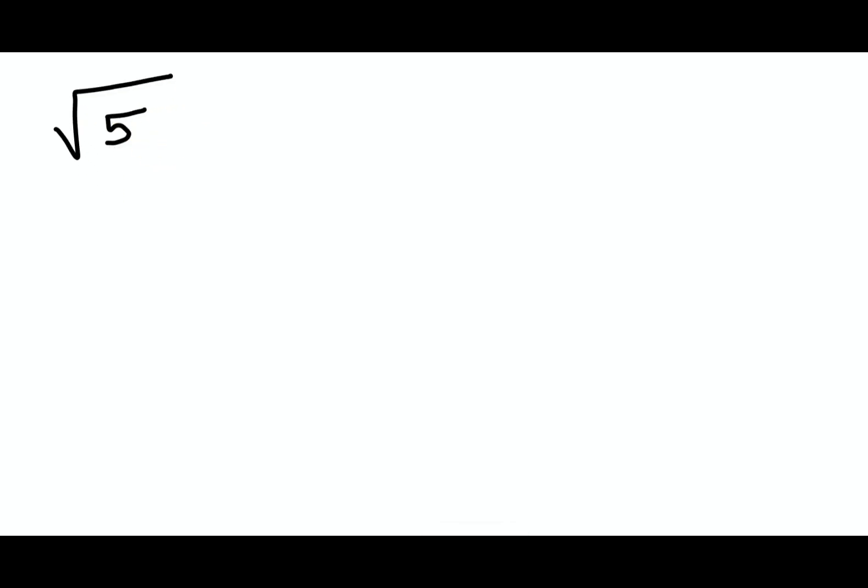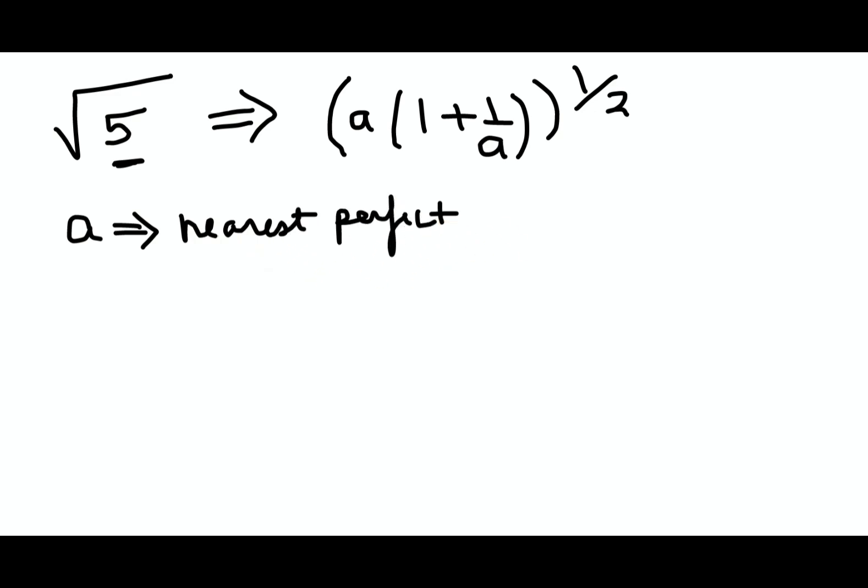Before going ahead, let's first understand what is the logic of finding root of an imperfect square. So let's try and find out the root of 5. What happens is, whenever there's an imperfect square in this particular place, what you will do is instead of writing this as root, we'll do the entire operation in the form of raise to half. Now how this happens is we'll take a out, and then we'll have 1 plus 1 upon a. So basically, where this a is nothing but the nearest perfect square.